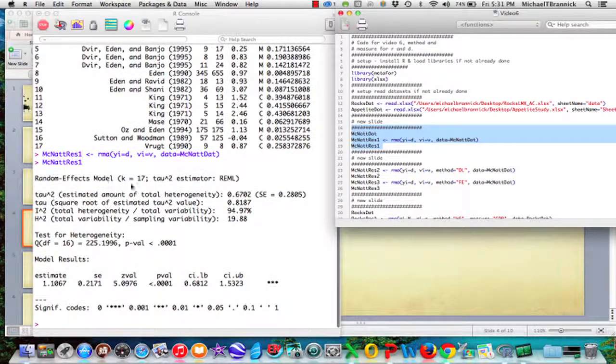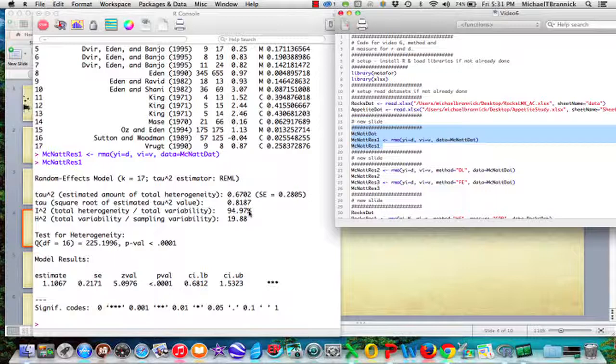And it says, okay, there's 17 studies. My estimator for tau squared for random effects is restricted maximum likelihood. My value of tau is about 0.82. My I-squared is about 95. So this is a really heterogeneous data set. My estimate is about 1.11 for my overall effect size D. And my confidence interval goes from about 0.68 to about 1.5.